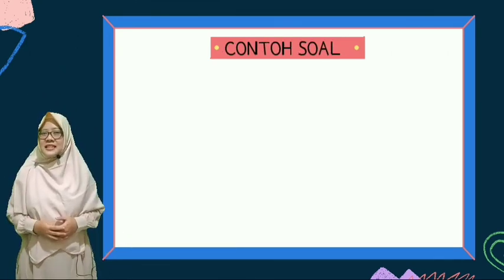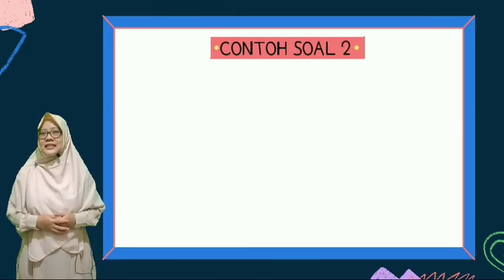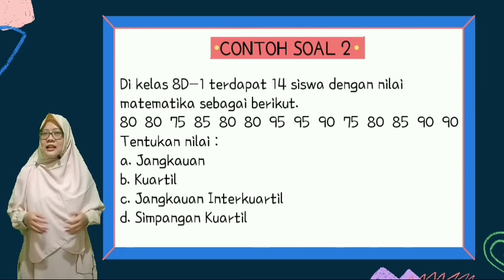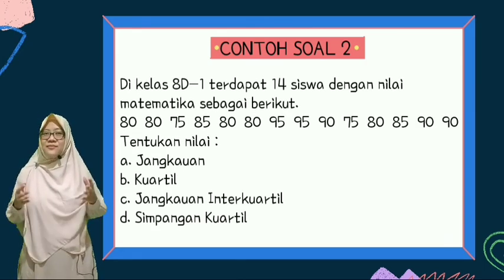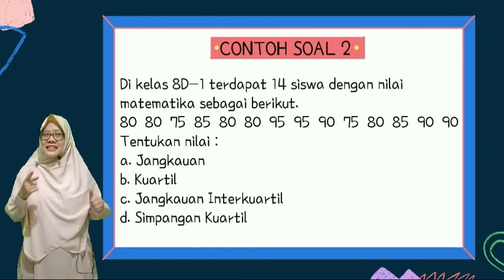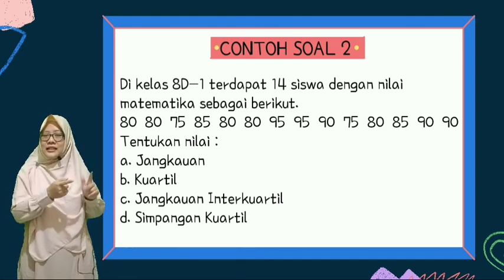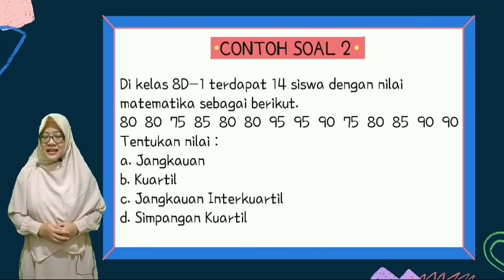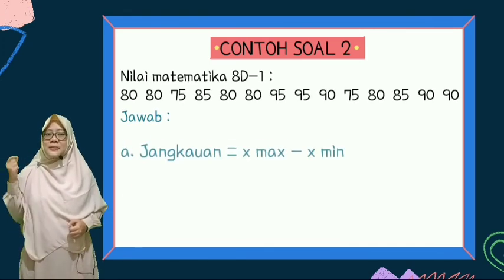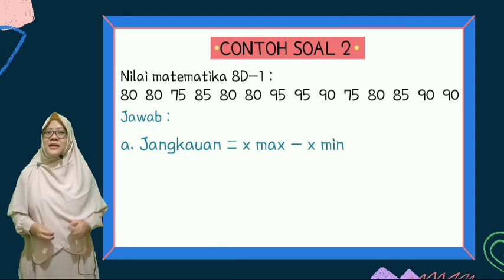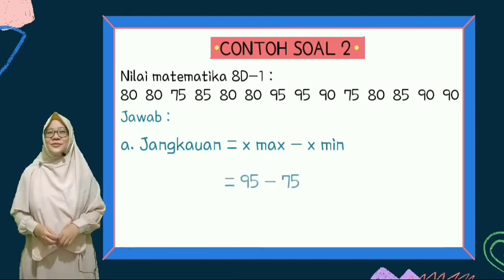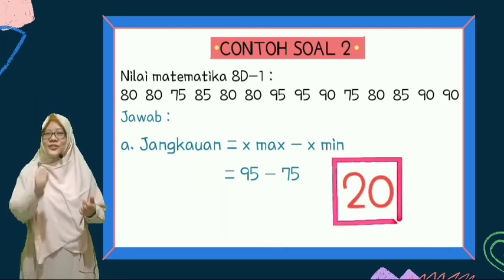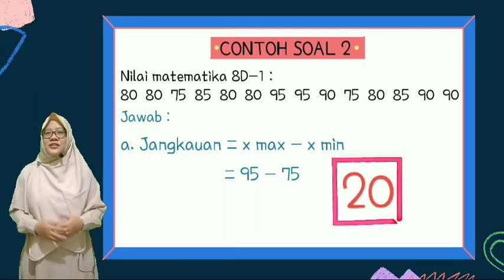Berikutnya kita akan menyelesaikan soal dengan data genap. Di sini ada nilai matematika dari 8D1 sebagai berikut. Yang dicari sama ya: jangkauan kuartil, interkuartil, simpangan kuartil. Kita jawab yang pertama. Jangkauannya — nilai terbesar adalah 95, nilai terkecil adalah 75, maka 95 kurang 75 adalah 20.